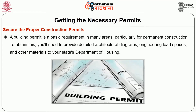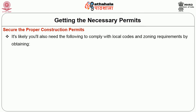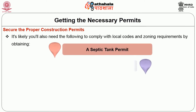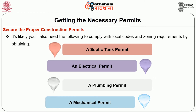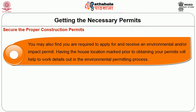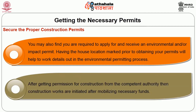Getting the necessary permits: a building permit is a basic requirement in many areas, particularly for permanent construction. To obtain this, you need to provide detailed architectural diagrams, engineering load spaces, and other materials to your state's department of housing. You will also need to comply with local codes and zoning requirements by obtaining a septic tank permit, electrical permit, plumbing permit, mechanical (air conditioning) permit, and possibly an environmental impact permit. Having the house location marked prior to obtaining permits will help work out details in the environmental permitting process.